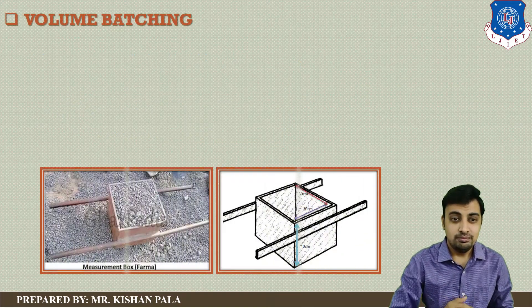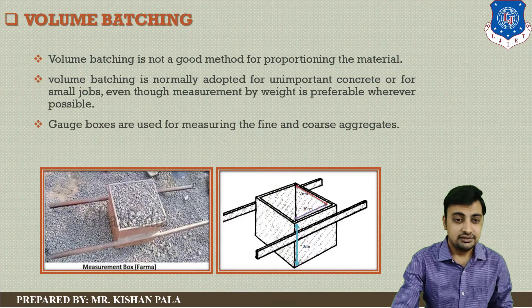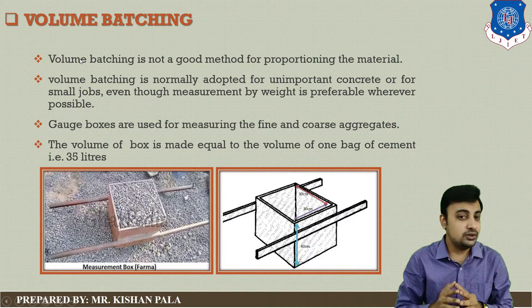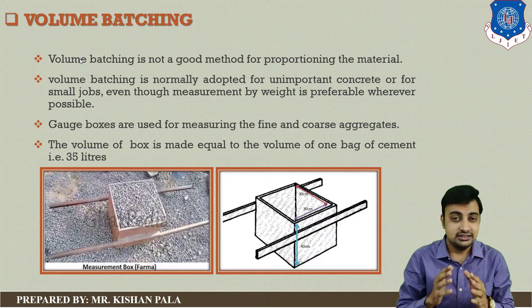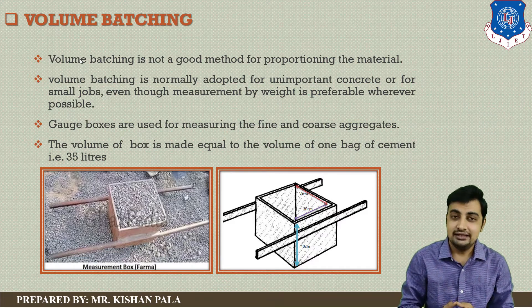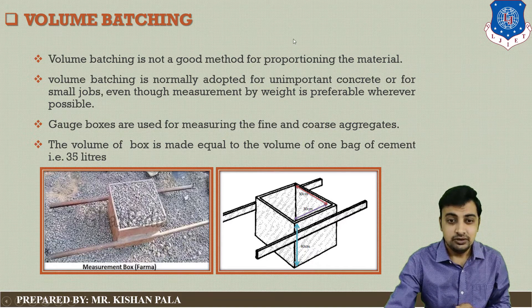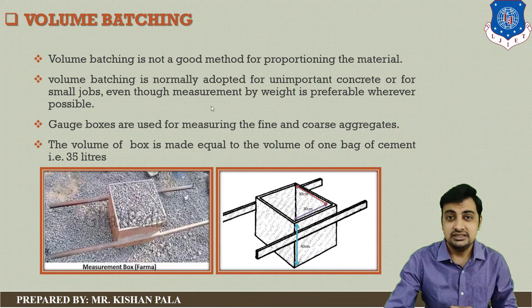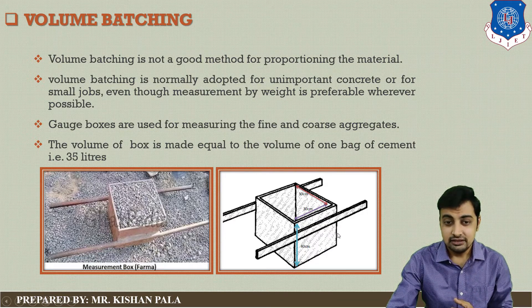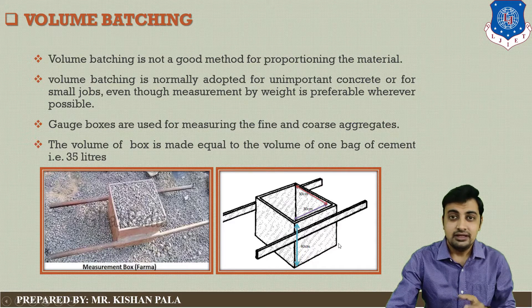First is volume batching. You can see on your screen the photo showing volume firmas. Volume batching is not a good method for proportioning of material and is not considered in large project work. It is used only for unimportant concreting work and small jobs. Measurement by weight is preferable whenever possible. The gauge box shown on screen has dimensions of 30 cm by 30 cm by 40 cm. Different sizes of firmas are available in the market, and depending upon the batching required, different volumes of firmas are needed.